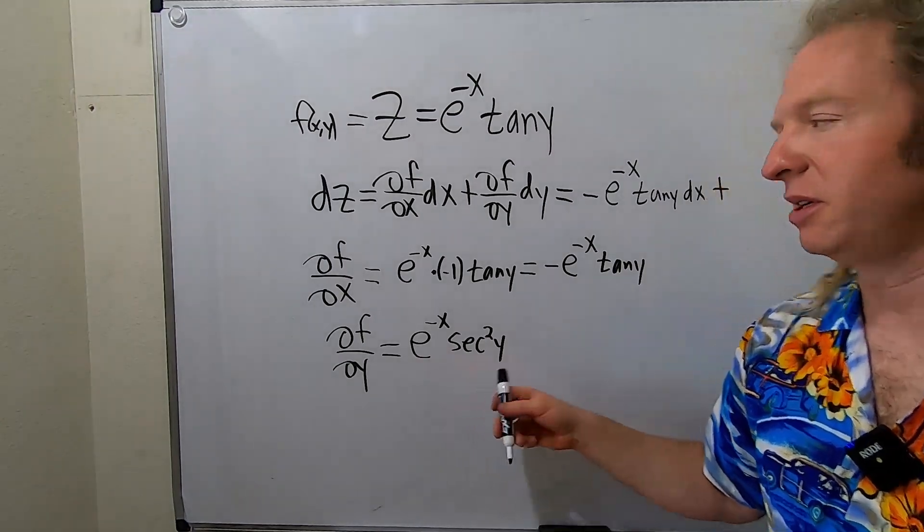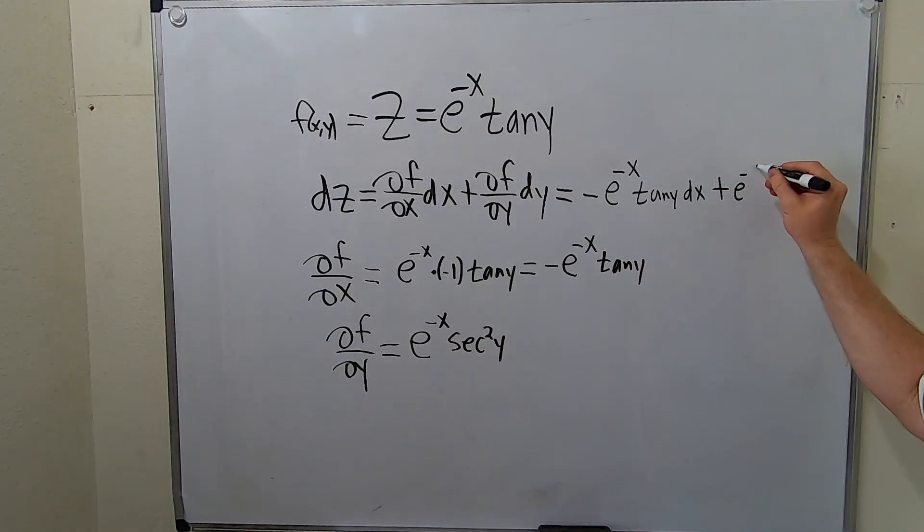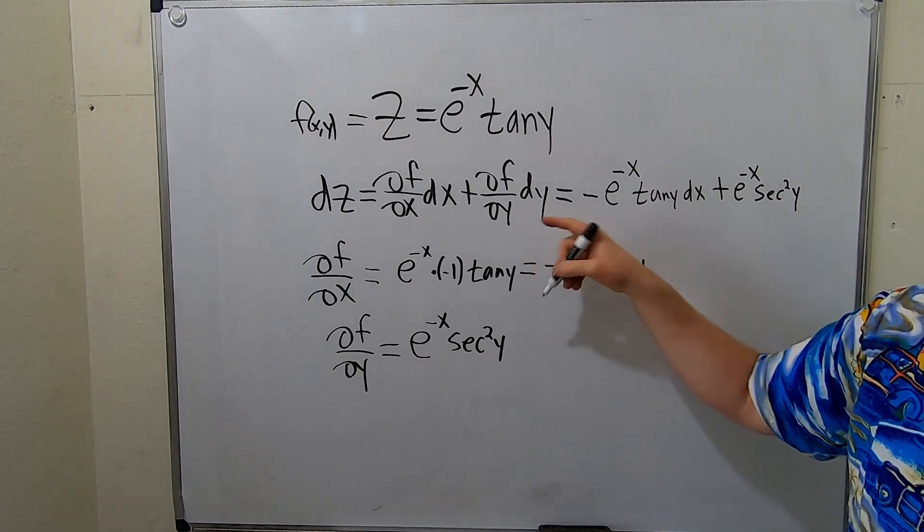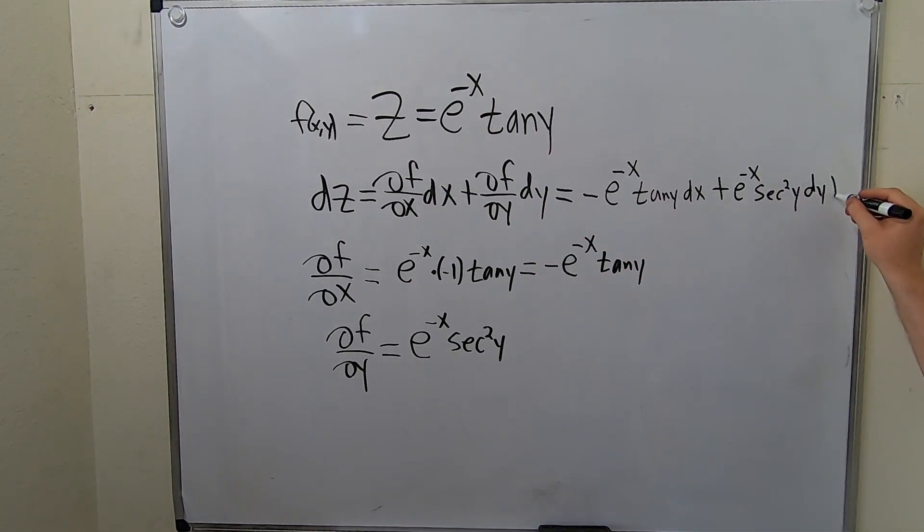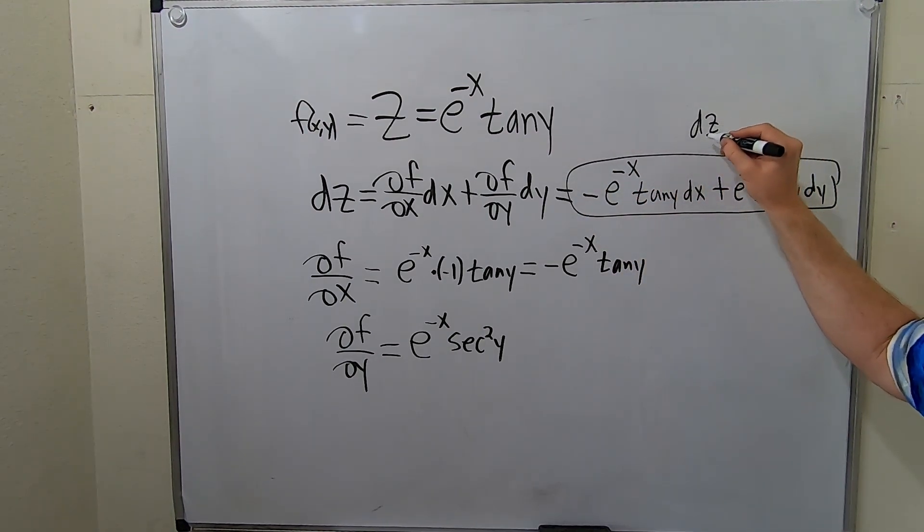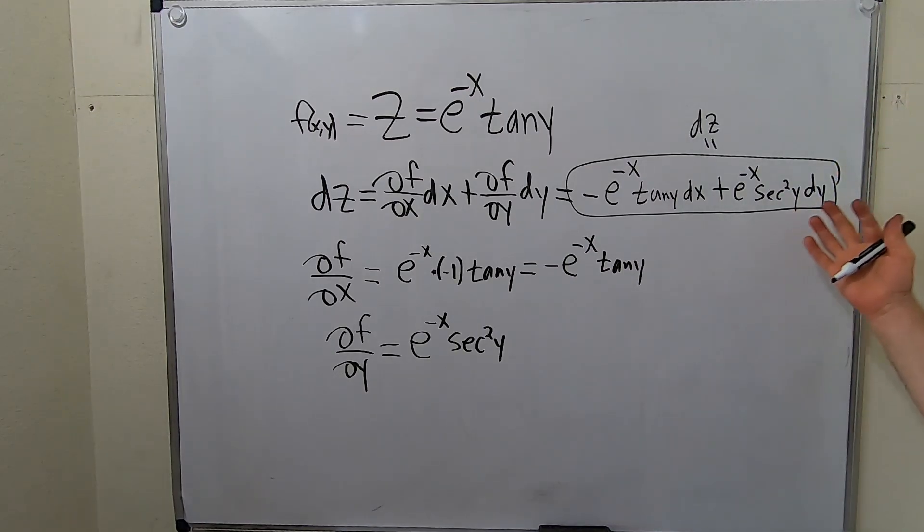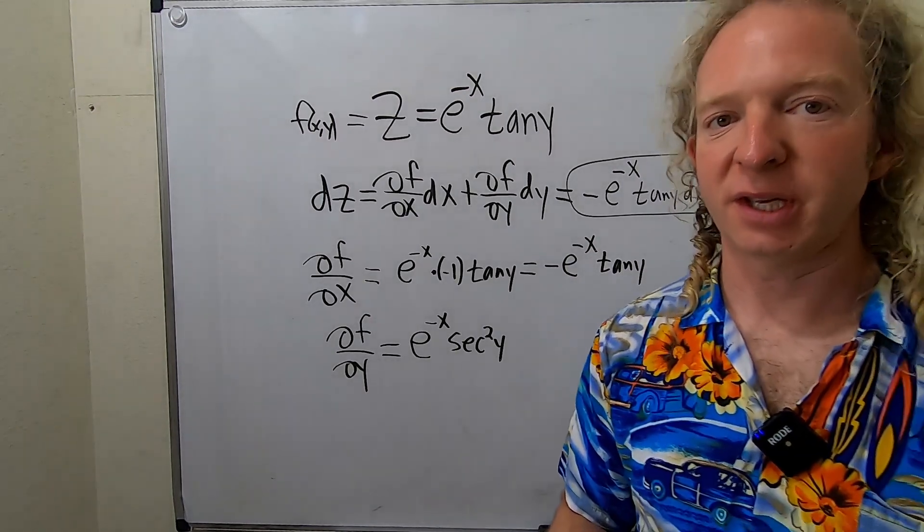And then ∂f/∂y is this piece here: e^(-x)sec²(y)dy. Don't forget the dy. And this, my friends, would be the final answer. This would be equal to dz. This is called the total differential of the function. I hope this video has been helpful. Take care.